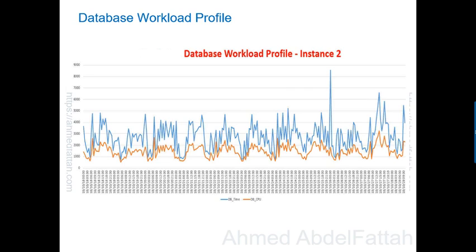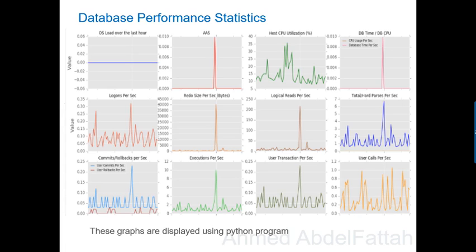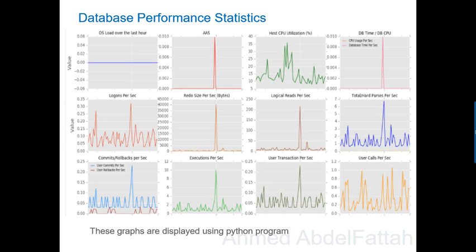This is another example to visualize performance statistics — many performance metrics, for example: host CPU utilization, average active sessions, logins per second, read size per second, logical reads per second, executions per second, commits and rollbacks per second, hard parses, user calls, and many other metrics that you can visualize. These graphs were developed using a Python program, querying the database statistics and then visualizing them. Using this type of graph simplifies our work and is very powerful.